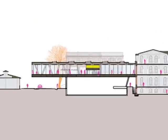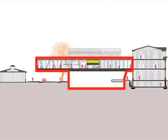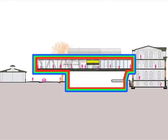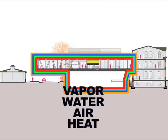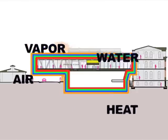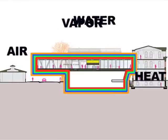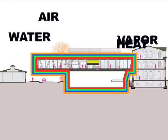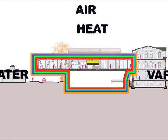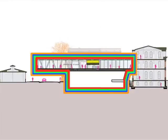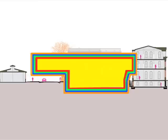Thus, we get four control layers: an air barrier, vapor retarder, water barrier, and thermal insulation. Each layer should be continuous, since the things being controlled — vapor, water, air or other gases, and heat — are continuously present at the building's surface. Control is needed to ensure that the levels or amounts of the things being controlled that are desired inside the control layers are brought about as efficiently as possible, given the uncontrollable nature of the levels encountered outside.